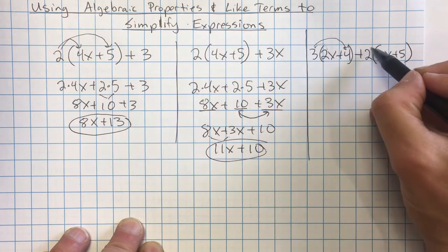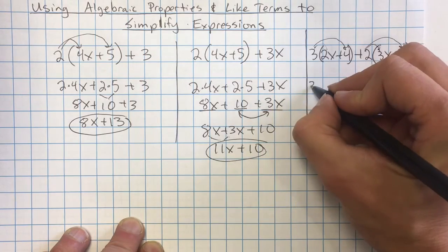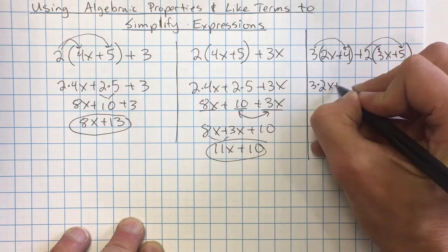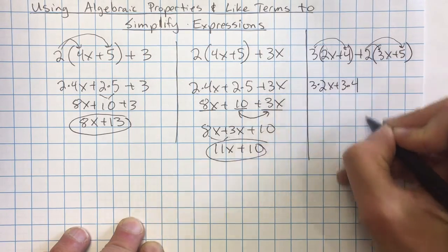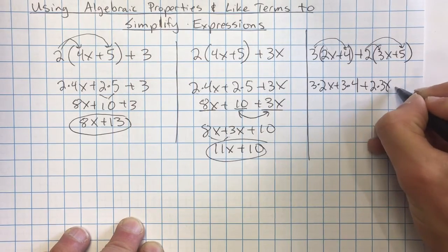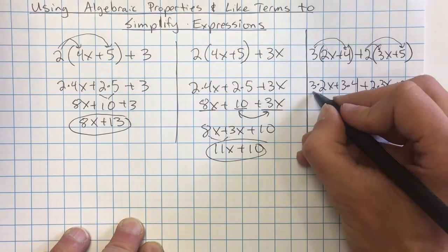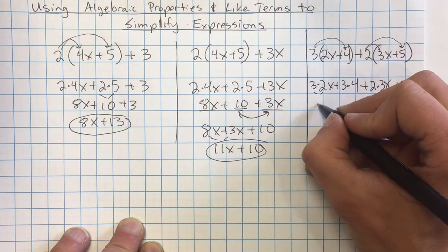3 goes to the 2, 3 goes to that. 2 is going to go to the 3. 2 is going to go to that. So I can rewrite this as 3 times 2x plus 3 times 4 plus 2 times 3x plus 2 times 5. And then I'm going to do the math that I can. I can multiply some things together.